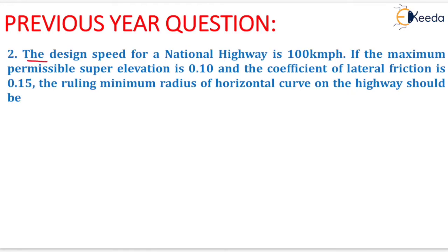The question is: the design speed for a national highway is 100 km per hour. This means the design speed equals 100 km per hour. If the maximum permissible super elevation is 0.10, meaning Emax equals 0.10, and the coefficient of lateral friction is 0.15.